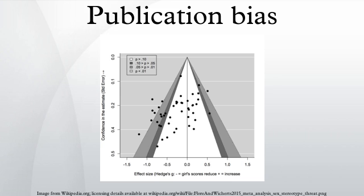Multiple factors contribute to publication bias. For instance, once a result is well established, it may become newsworthy to publish papers affirming the null result. It has been found that the most common reason for non-publication is investigators declining to submit results for publication. Factors cited as underlying this effect include investigators assuming they must have made a mistake to not find a known finding, loss of interest in the topic, or anticipation that others will be uninterested in the null results.